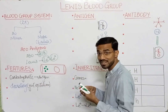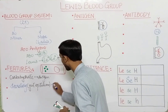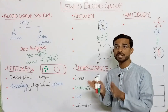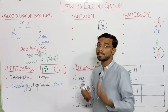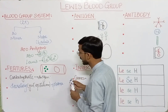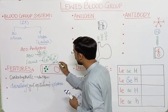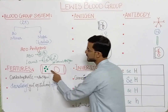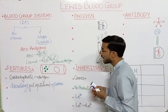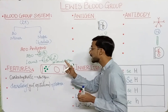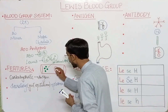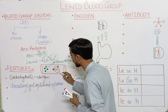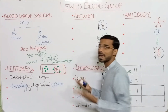The Lewis antigen is present in the plasma — this point is very important. This antigen is not actually attached to the RBCs; it is present in the plasma. The Lewis antigen has the ability to attach to the RBCs and can attach and detach easily from the surface of the RBCs.